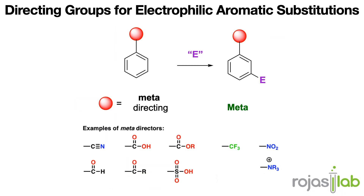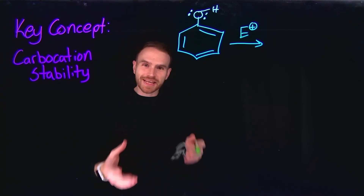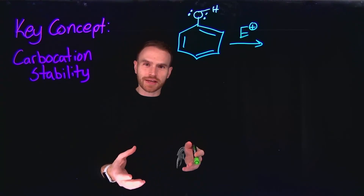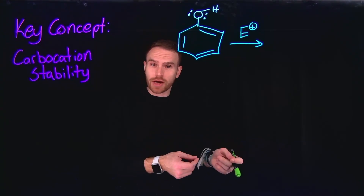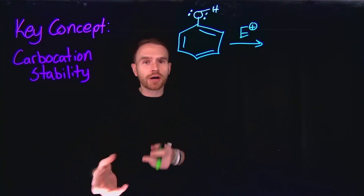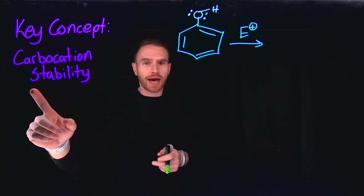In the second pattern, a different family of substituents direct the reaction to give primarily meta or 1,3 products. Examples of meta directors include nitriles, carbonyl compounds, sulfones, electron deficient alkyl groups, nitro groups, and alkyl ammoniums. The key to understanding whether a substituent is ortho and para directing or meta directing all comes down to carbocation stability.